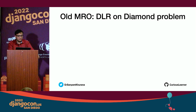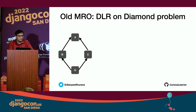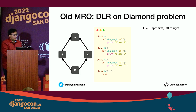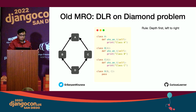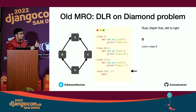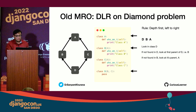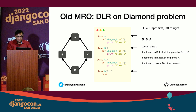Let's run the DLR example on the diamond problem. The rule is depth-first left-to-right. If I call a method on class D, Python first looks in D itself. If not found, it looks at D's first parent, B. If not found in B, it looks at B's parent, A. If not found in A, it looks at B's other parent — which is nothing. So now it has no choice but to go to D's other parent, which is C.